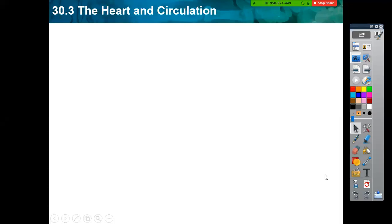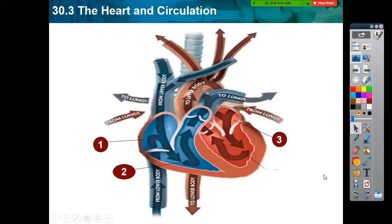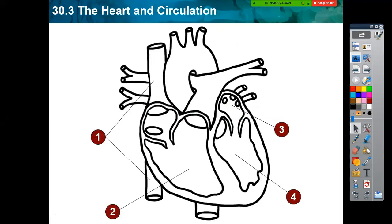Let's start our second main point of our lesson, which is the blood flow within our body. The blood flows through the heart in specific pathways. As you see in front of you, it looks a little bit complicated, but it will be a piece of cake once you practice the pathways using this plain heart diagram included in your PowerPoint. We will start with the right side of the heart.